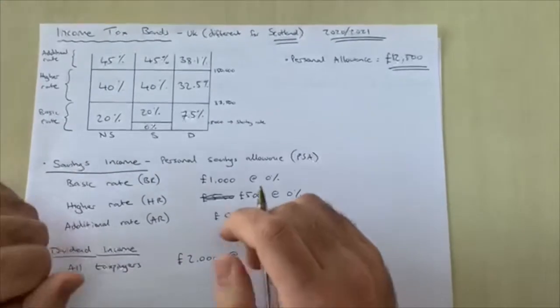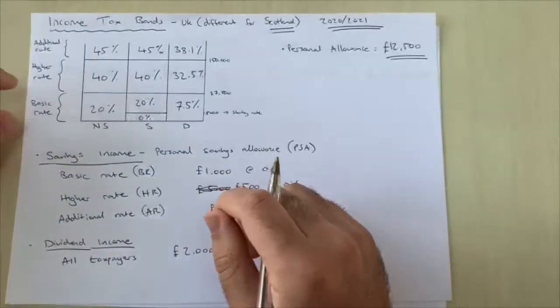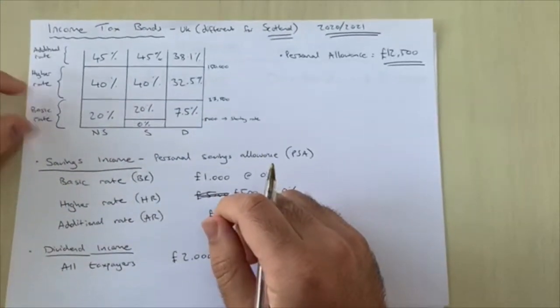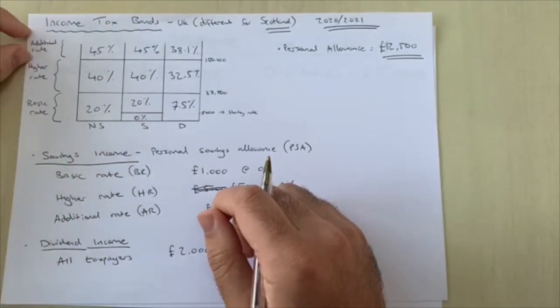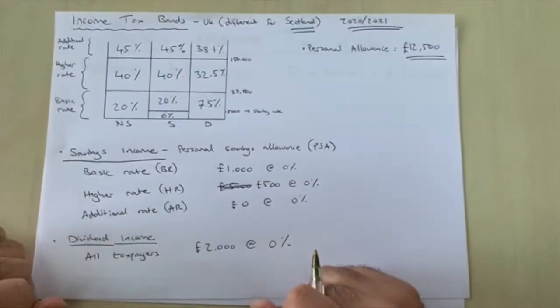There are three bands: the basic rate band, the higher rate band, and the additional rate band, and there are different tax rates for each of these bands.